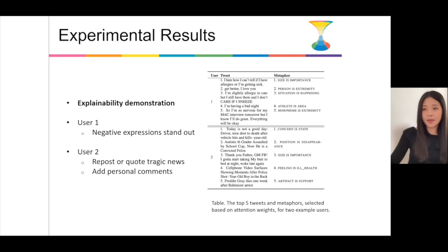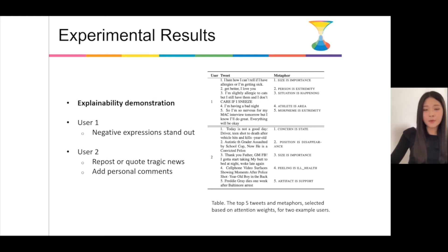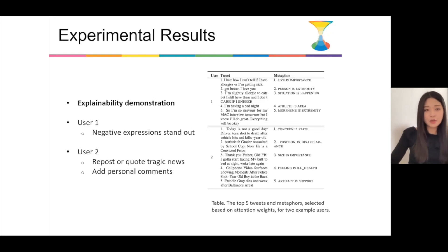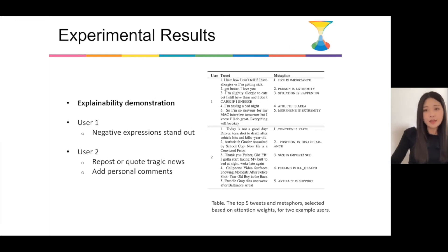We also demonstrate the explainability of our model here. The table shows the top five tweets and metaphors selected based on attention weight for two example depressed users. By examining the results, we can draw some interesting conclusions. For example, for the first user, they use negative expressions and tone. And for the second user, they tend to report or quote trending news events, and sometimes they add some personal comments to them.